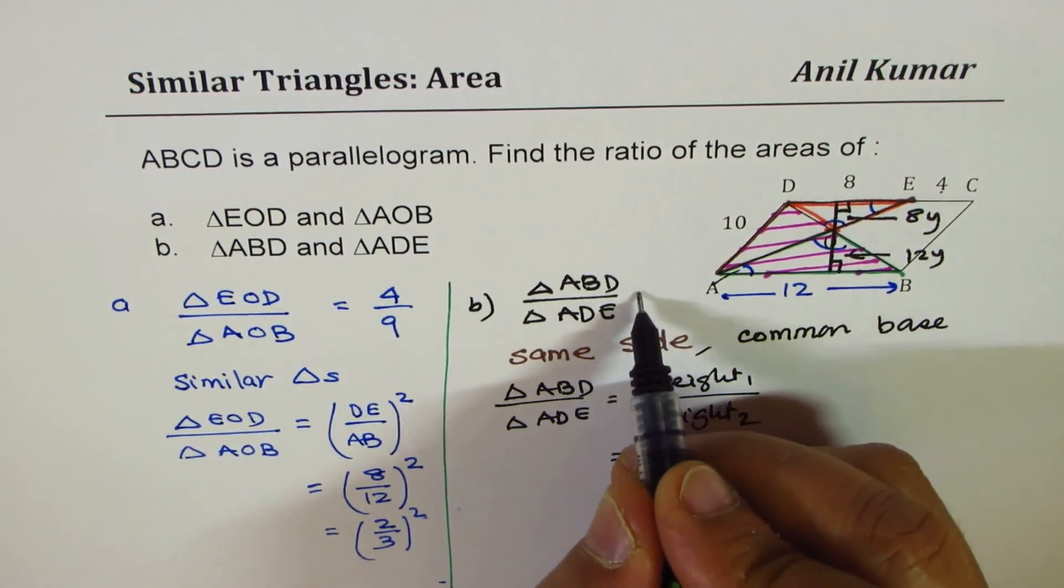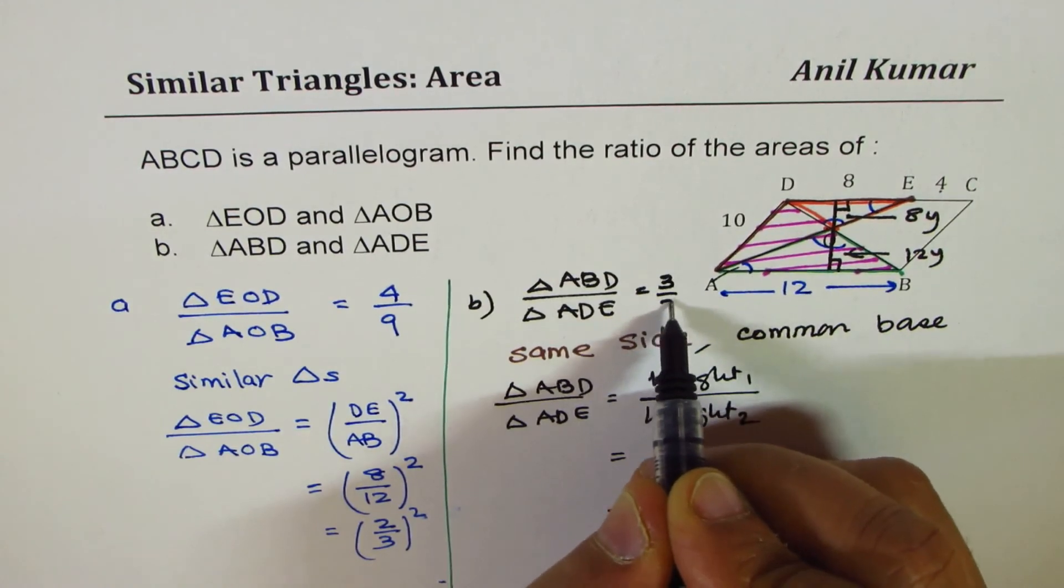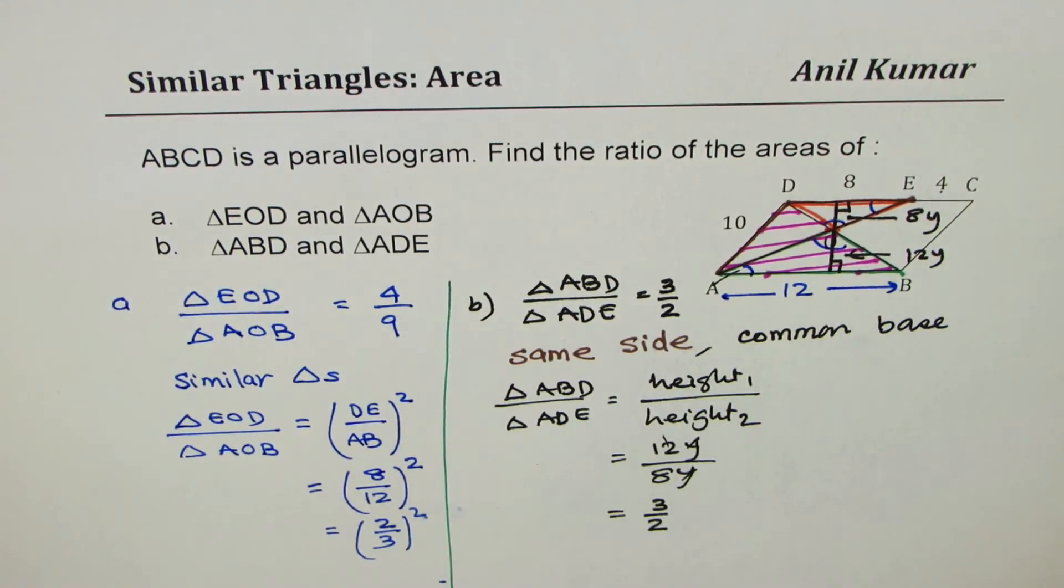So in the second case, the answer is 3 over 2, right? So that is how you could actually answer such questions.